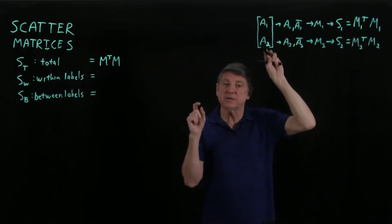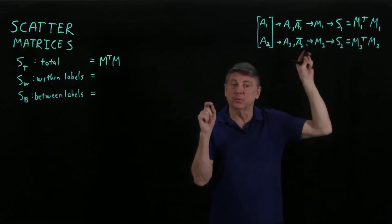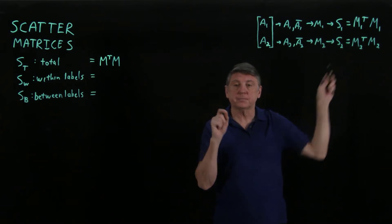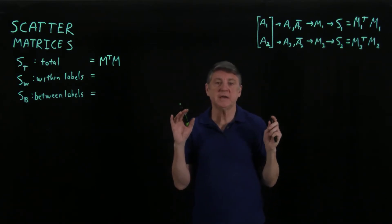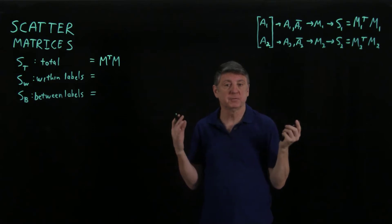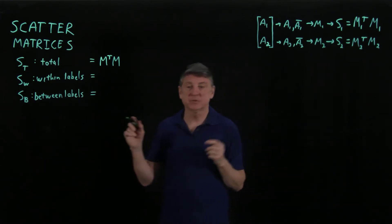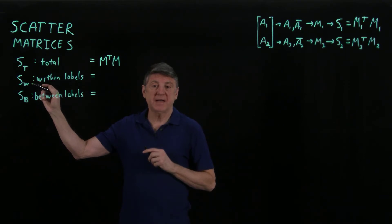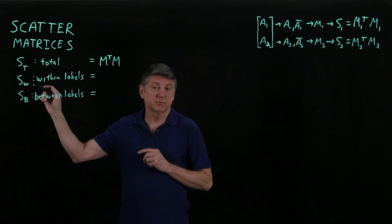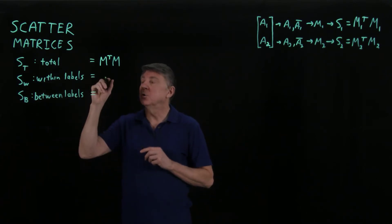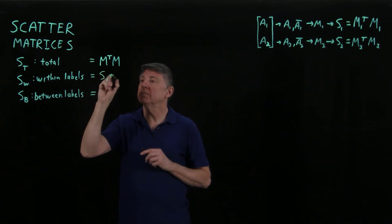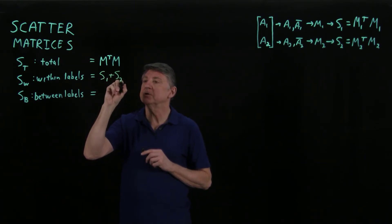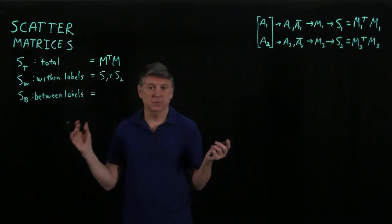And likewise, for label two, we can perform the same thing. So we can now formulate what Fisher referred to as within labels. In machine learning, this is normally referred to as the scatter matrix for within, subscripted with a W, and that will be scatter matrix one plus scatter matrix two.